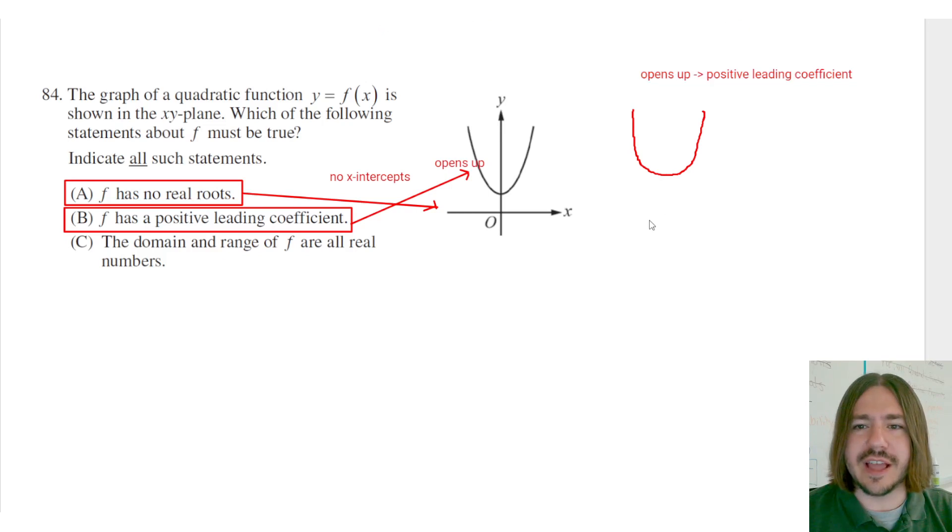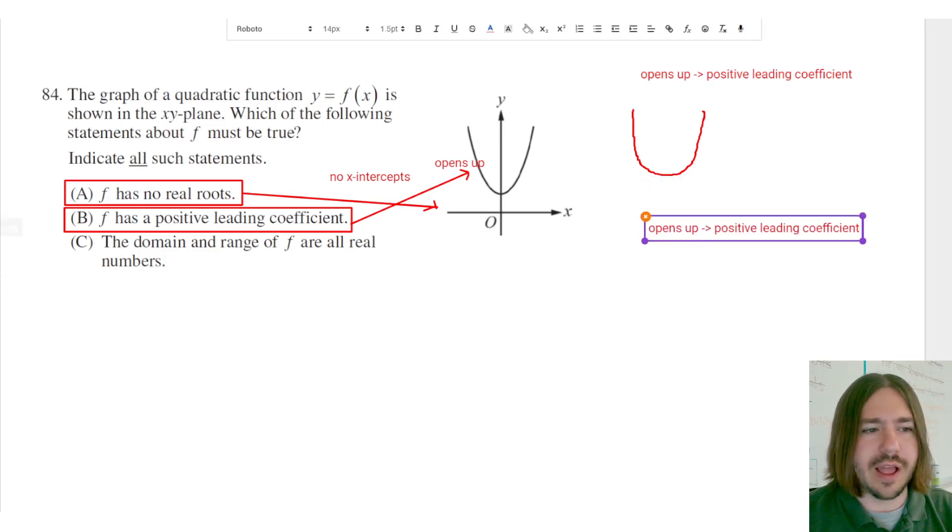And then if it opens down, meaning if the parabola is facing downwards like this, then you'll have a negative leading coefficient.